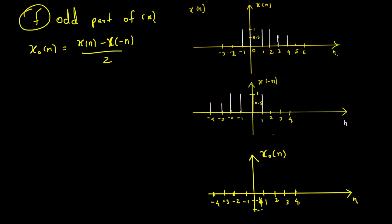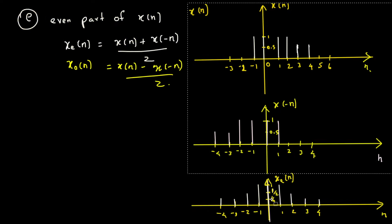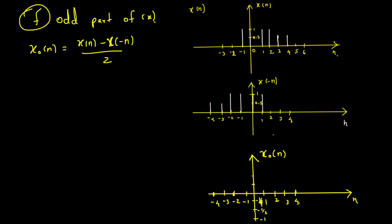The possible values that appear are negative one over four, negative one over two, and negative one — because we are subtracting, unlike the even part which had positive values. For the first point: 0 minus 0.5 divided by 2 gives negative 1 over 4. The next point is the same: 0 minus 0.5 divided by 2, also negative 1 over 4. Then 0 minus 1 divided by 2 gives negative 0.5.